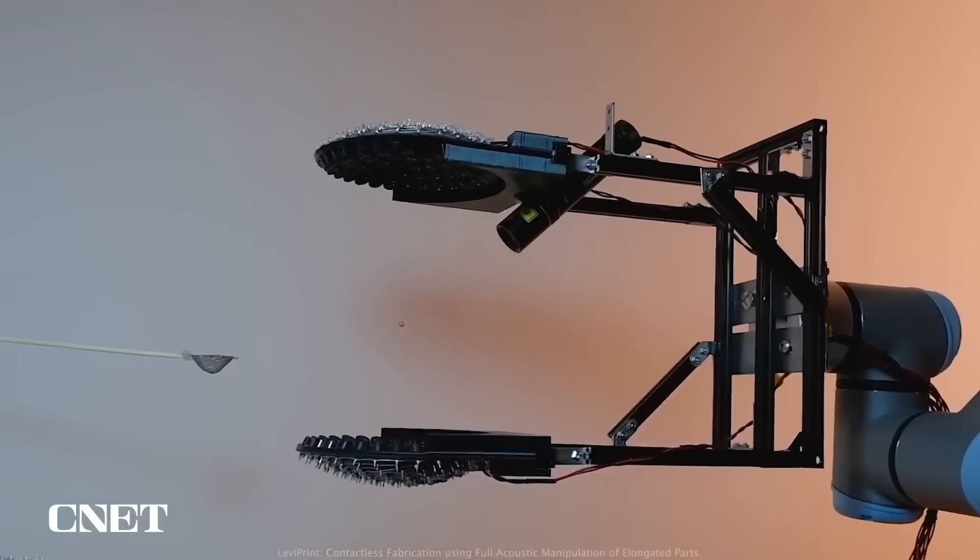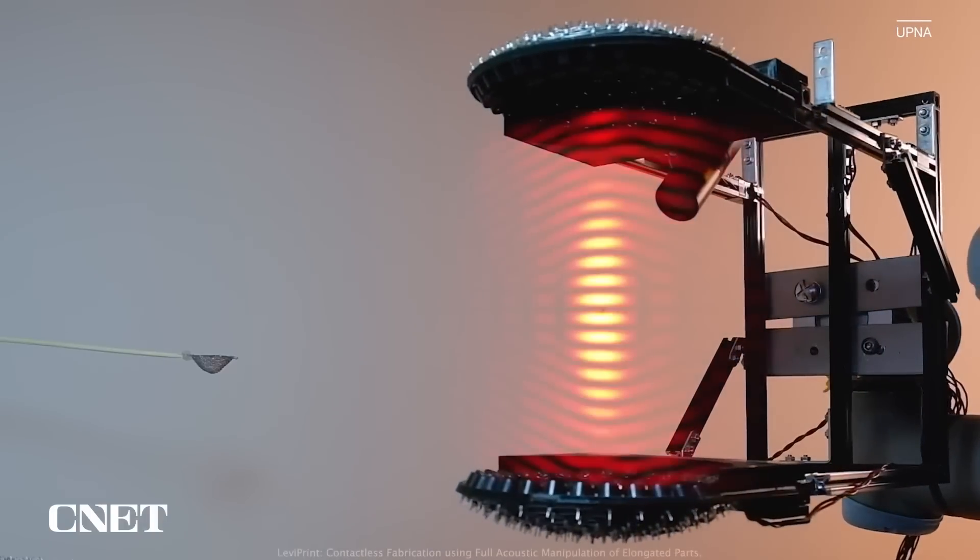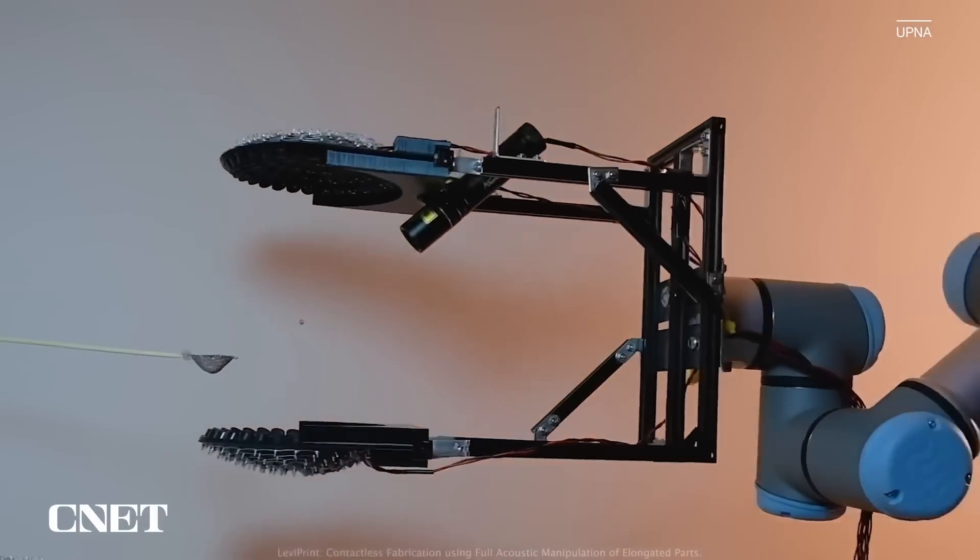The levitation is created by sound waves with a frequency approximately double the highest frequency humans can hear. When you create these sound fields, they have different shapes, usually with a wavy pattern. When you put small objects in, they get trapped in this standing wave.